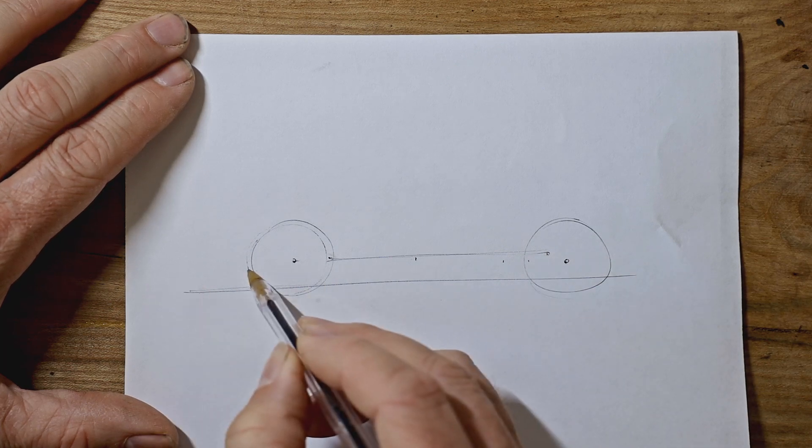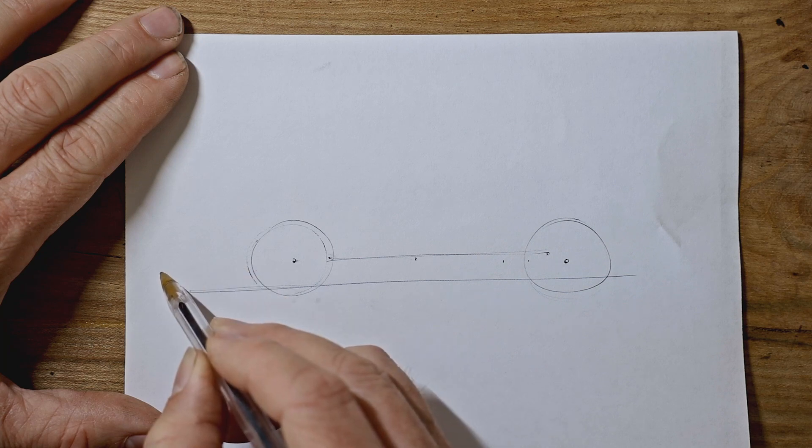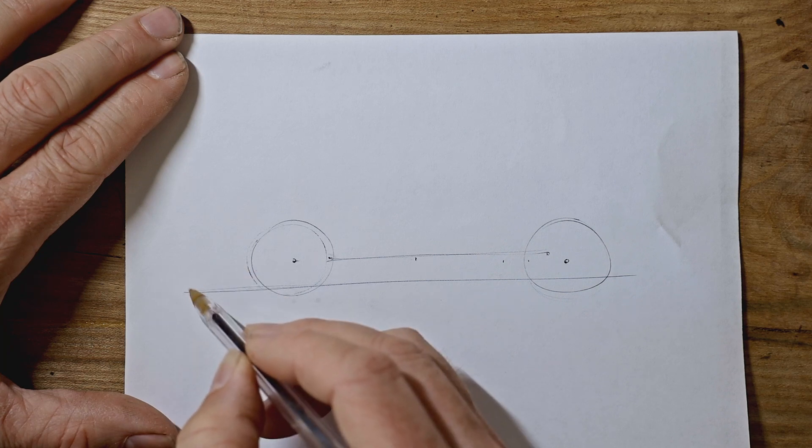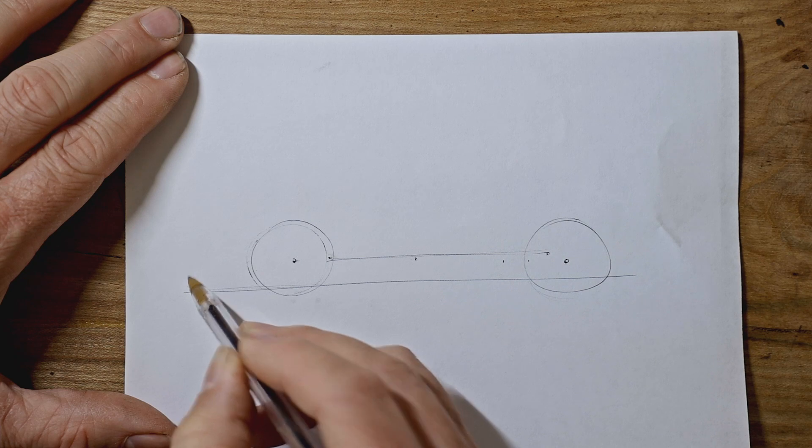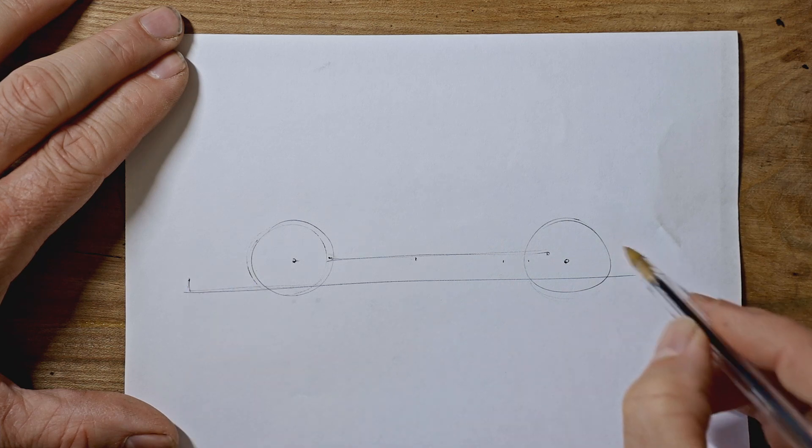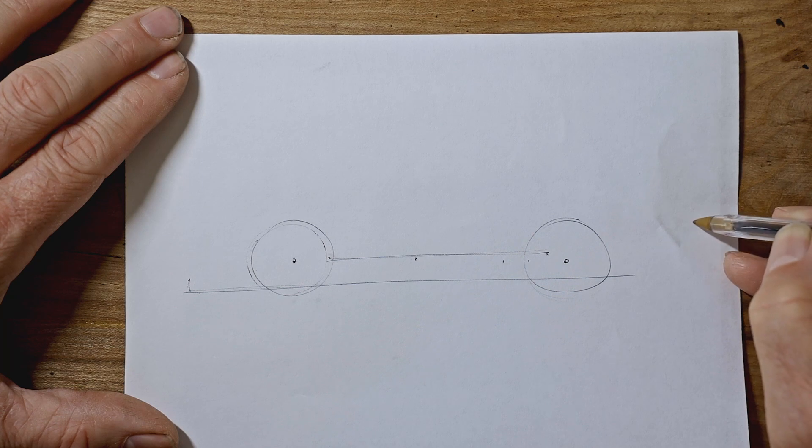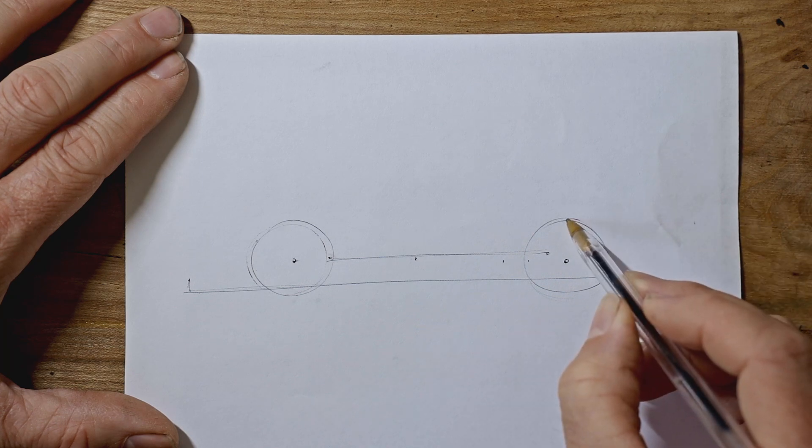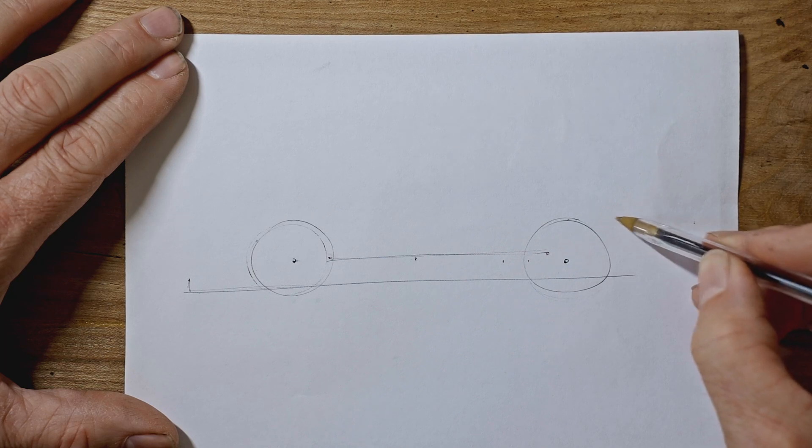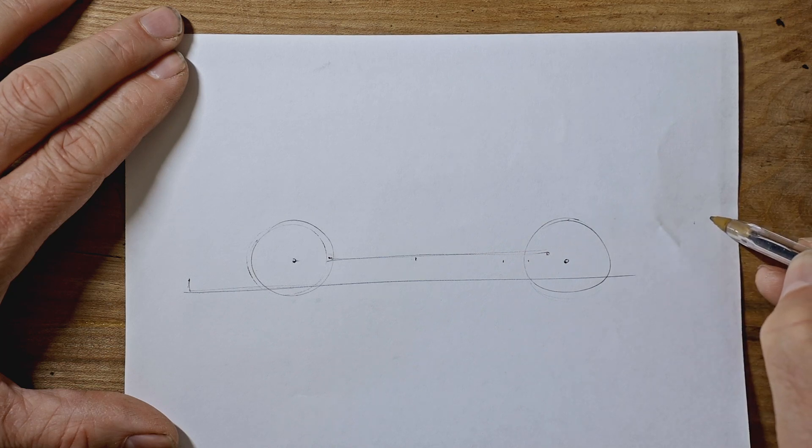The nose of the car is almost a whole wheel in front, say three quarters of a wheel. Make a little line there for the nose. And the tail end of the car is, say, a wheel level with the top of the back wheel there. And then you measure one wheel and a quarter. Just about fits in.